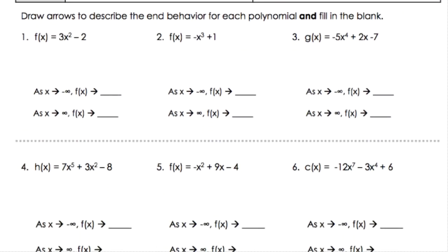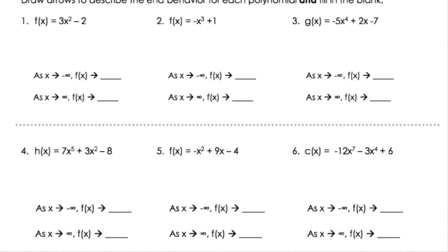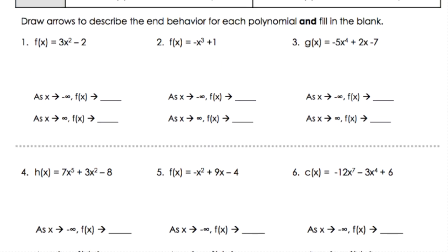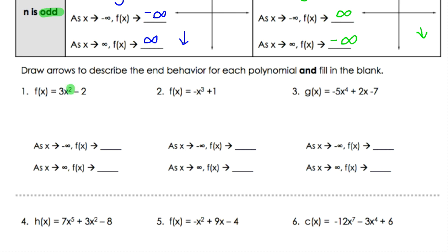This helps us determine end behavior without graphing every equation — just look at the degree and the leading coefficient. Let's practice. Pause the video and try these six problems. For the first one: even degree with a positive leading coefficient means both ends are pointing upward. Number two: third degree (odd) with a negative leading coefficient — the ends go opposite, with the left side going upward and the right side going downwards.